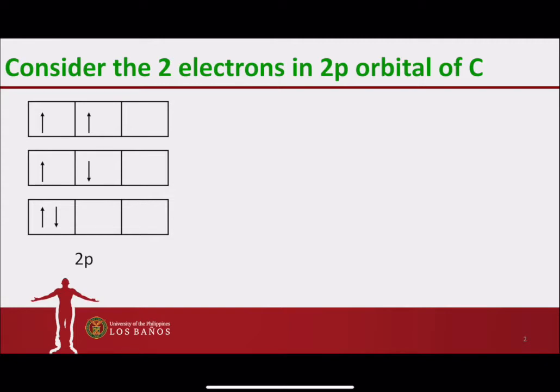Now, why is it that the top arrangement is the one that we consider as the ground state or the one which has the lowest energy?